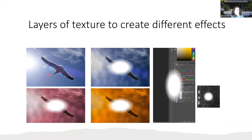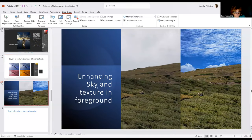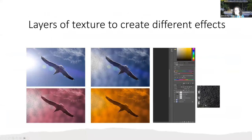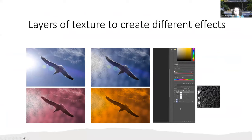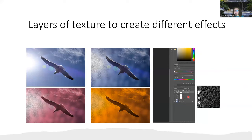Layers of texture to create different effects. Here's a simple bird in the sky — I think I used the rug as the textured layer for this one. I changed different things — brightness, a curves layer added, then the texture layer, and a hue/saturation layer over it to make different colors.